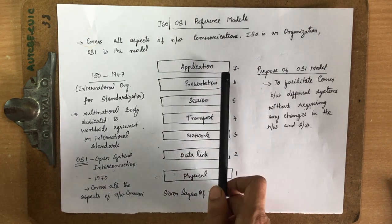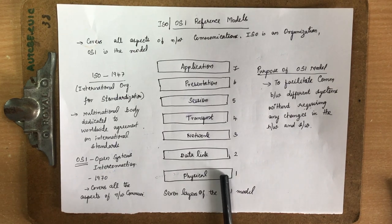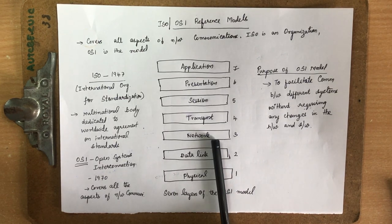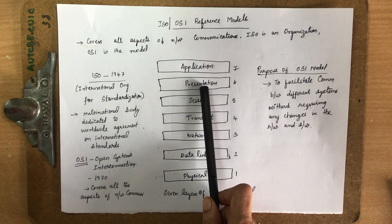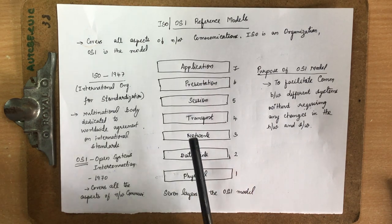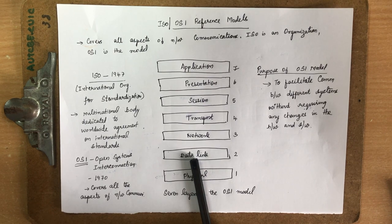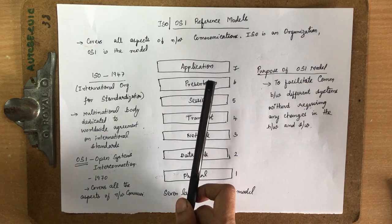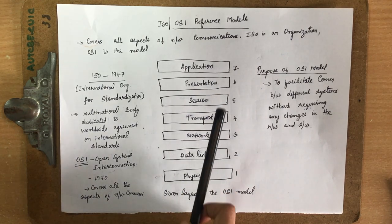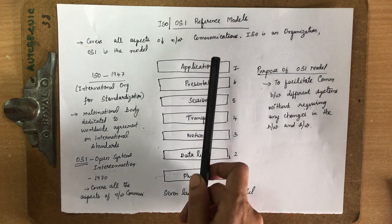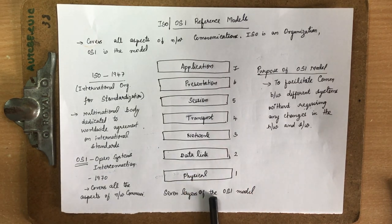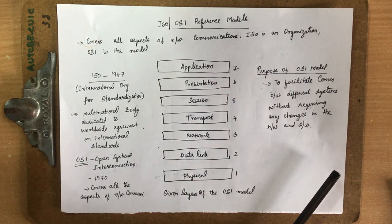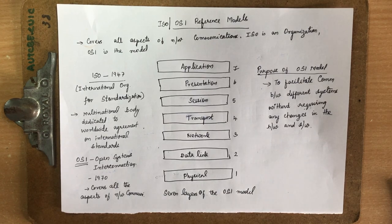In the OSI model, it has seven layers: physical layer, data link layer, network layer, transport layer, session layer, presentation layer, and application layer. Based on protocol layering, any larger problem can be decomposed into smaller ones and handled by individual layers. A message will be sent through all seven layers and transmitted to the other side.